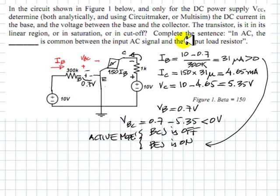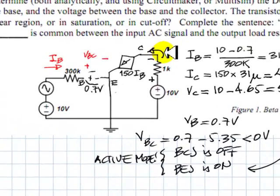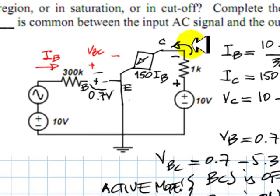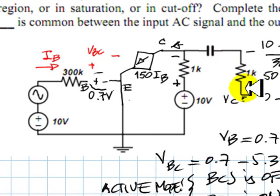I see that something is common between the input AC source that was here and the output load resistor. Let me bring it back, even at the cost of erasing some of our computation, it doesn't matter at this point.